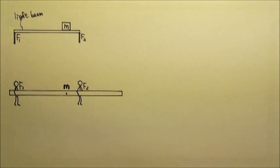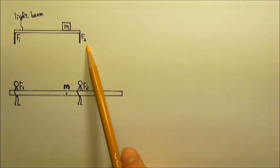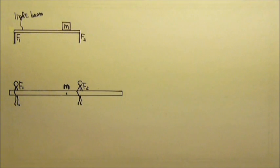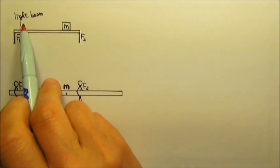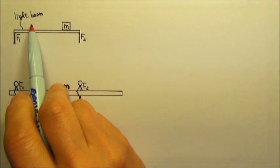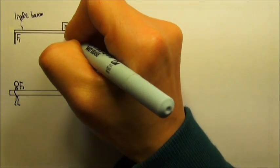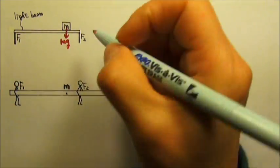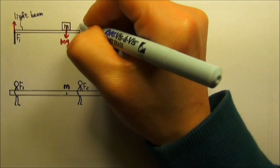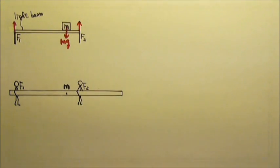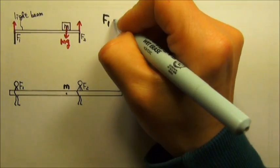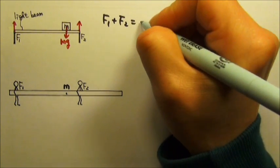We have also done problems like these. Let's say we are looking for the support forces F1 and F2. We will draw all the forces acting on the beam. The beam is light, so we do not have to worry about Mg of the beam, and we have Mg of the box. F1 and F2 acting on the beam will be upward. For net force equals to zero, the upward forces must equal the downward forces, so F1 plus F2 equals Mg.